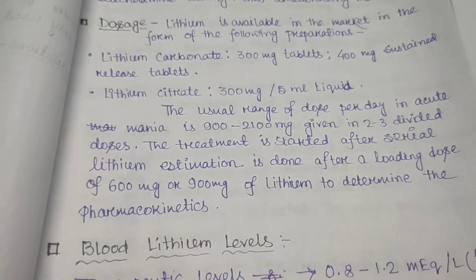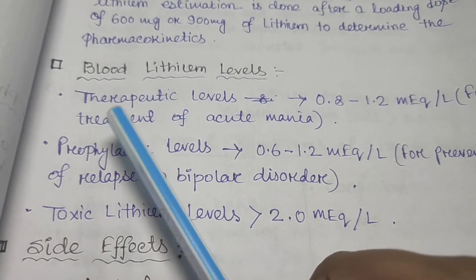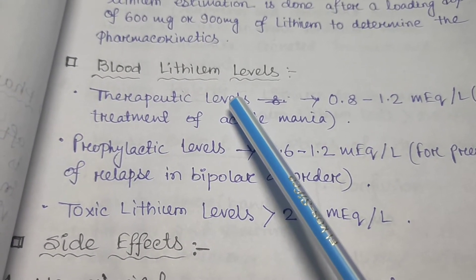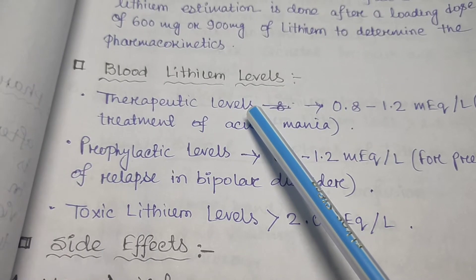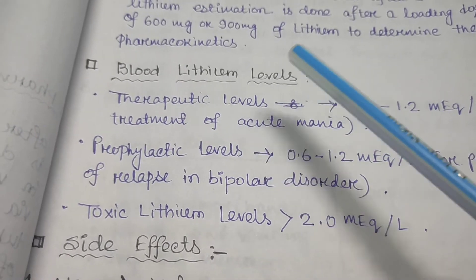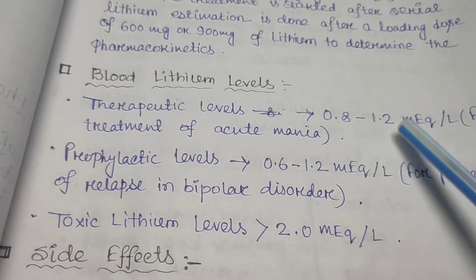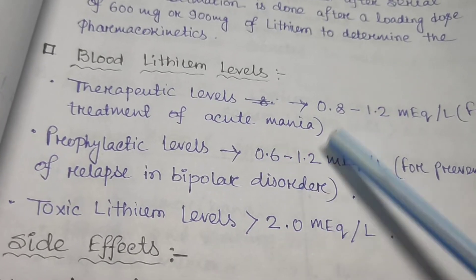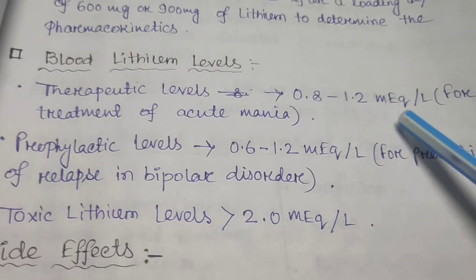Next, blood lithium levels. The therapeutic level — meaning the lithium concentration in the blood needed for effective treatment — is 0.8 to 1.2 milliequivalents per liter for the treatment of acute mania.